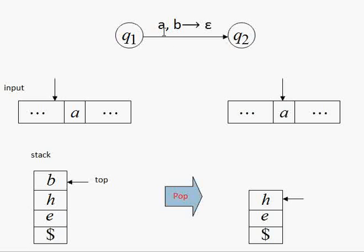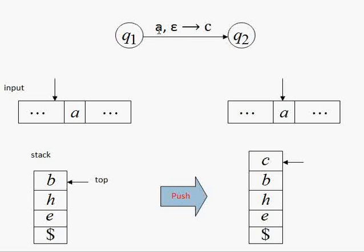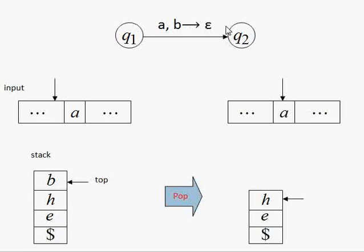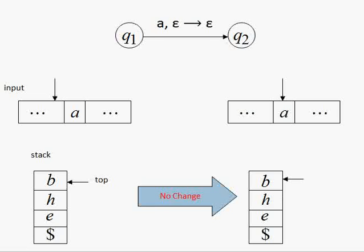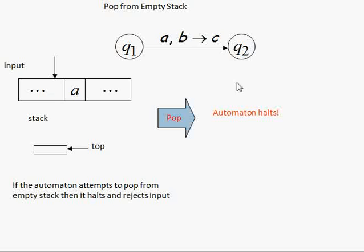Another operation is called pop. If we have a as the input symbol and b as the topmost element in the stack, we simply pop it, writing epsilon there. So for push: a comma epsilon arrow c; for pop: a comma b arrow epsilon. The last stack operation is no-change: a comma epsilon arrow epsilon — it just reads a and does nothing to the stack.